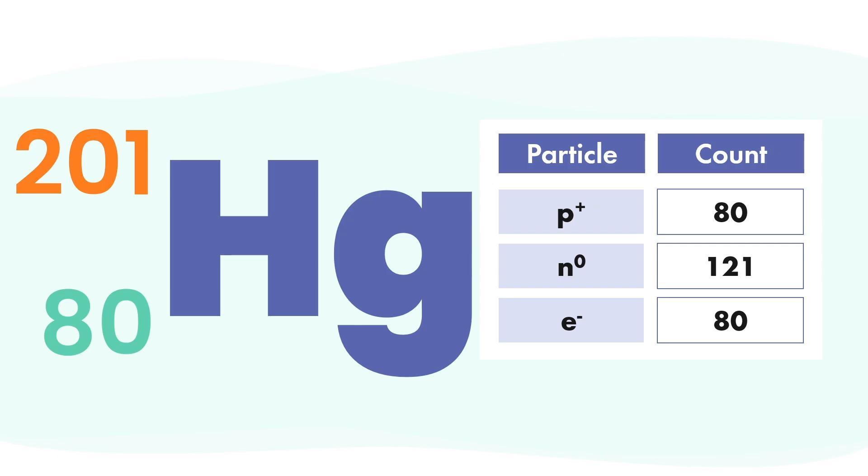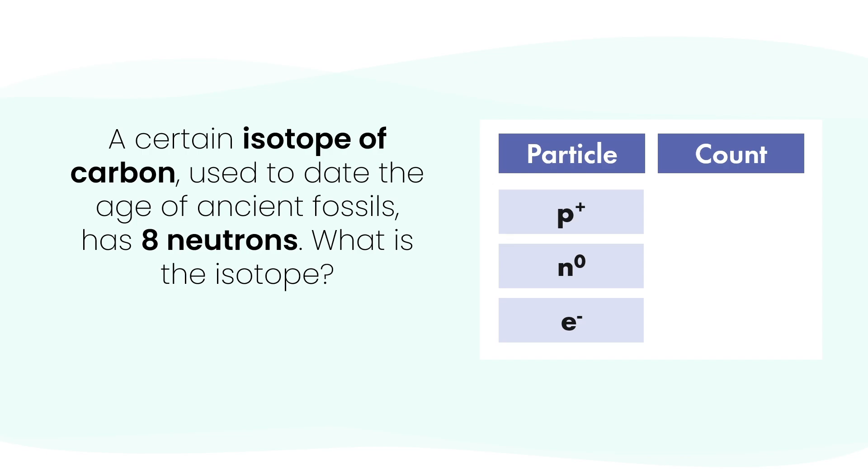Let's try a real-world example, the kind scientists actually use. Here's the question: A certain isotope of carbon used to date the age of ancient fossils has 8 neutrons. What is the isotope?